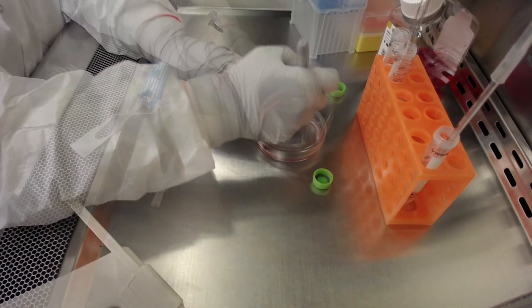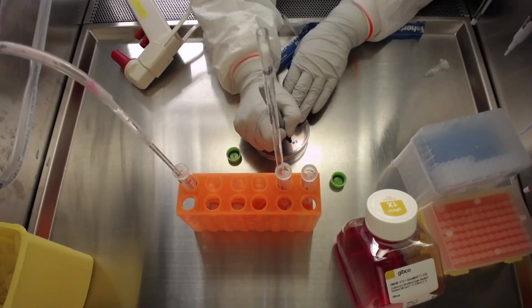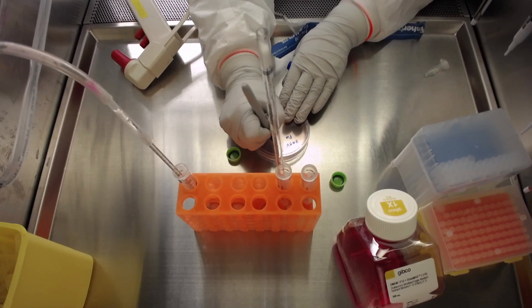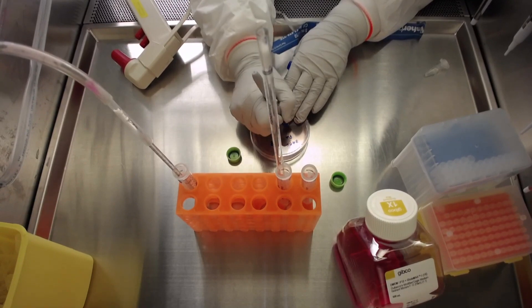It is important to clearly label your dish with relevant information such as the cell line name, date of plating, type of media used, and any other information you deem important.